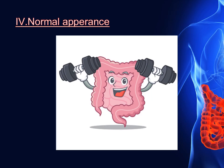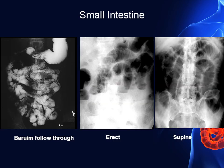To detect any abnormality, you should first know the normal appearance. Here is a picture of the barium follow-through and here is a plain X-ray in erect and supine position. In the barium follow-through, you can see the caliber, the smooth outlining, and the valvulae conniventes mucosal folds. In the erect position, the air will float cranially and the fluid within the bowel will create air-fluid levels to some acceptable extent.